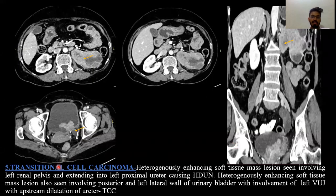Fifth case: Transitional cell carcinoma. There is a heterogeneously enhancing soft tissue mass lesion involving the left renal pelvis, extending to involve the left proximal ureter and causing hydro-ureteronephrosis. There is also a heterogeneously enhancing soft tissue mass lesion involving the posterior and left lateral wall of the urinary bladder with involvement of the left VUJ and upstream dilatation of the ureter.